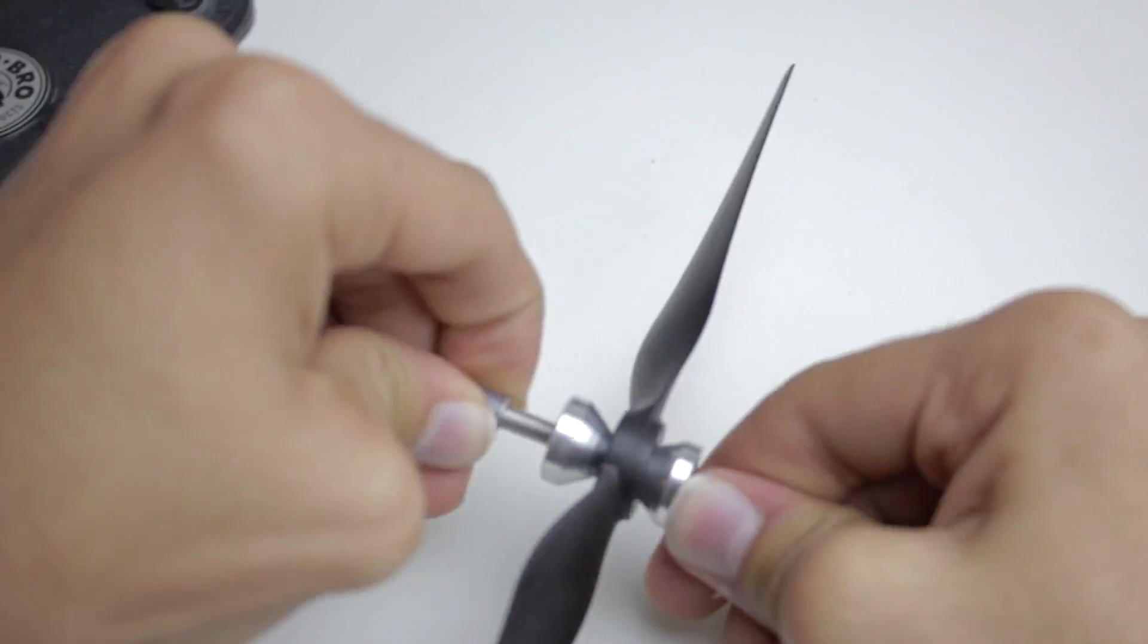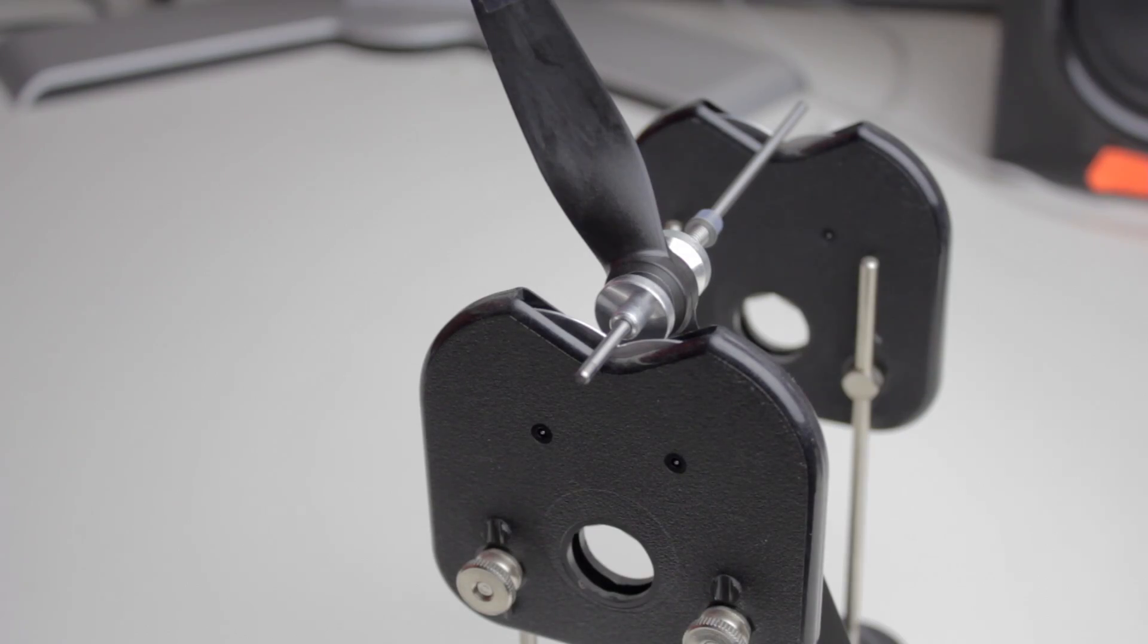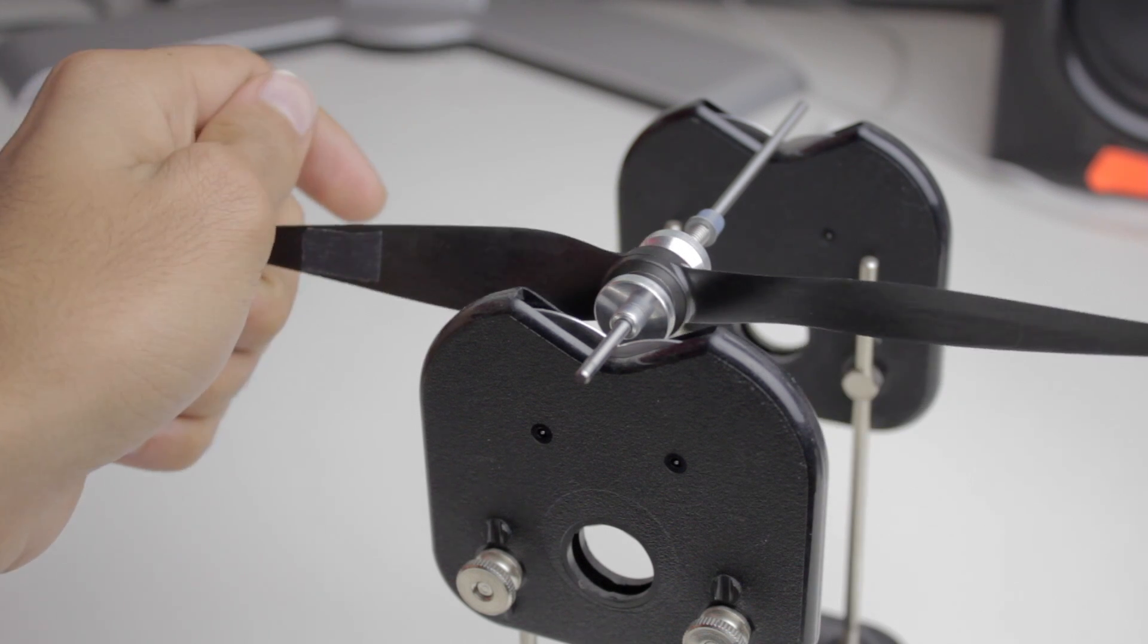The first thing that we're going to do is mount the prop onto the prop balancer. You don't have to balance your props but there's going to be a lot less vibration if you do.